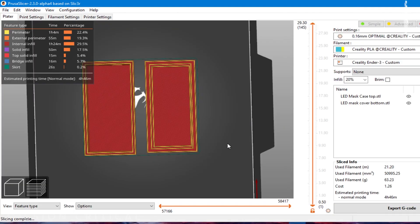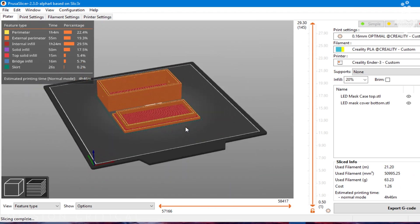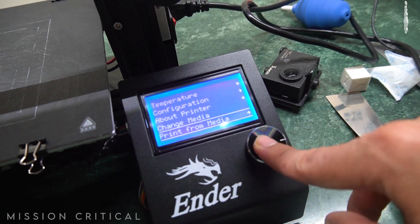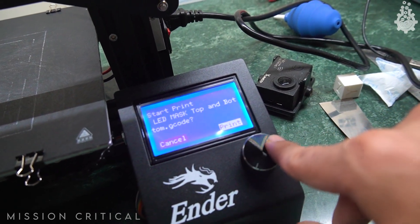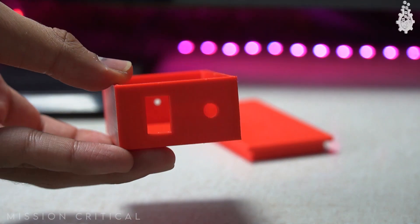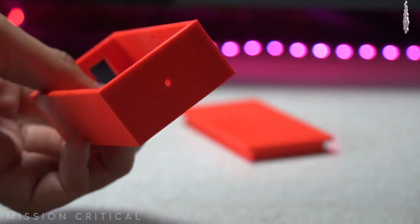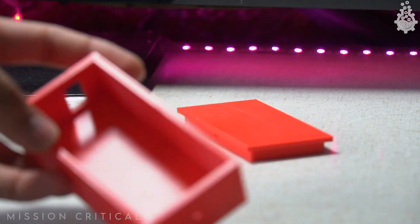And at last I used the Prusa slicer to slice the 3D model and then used my 3D printer to print the case.